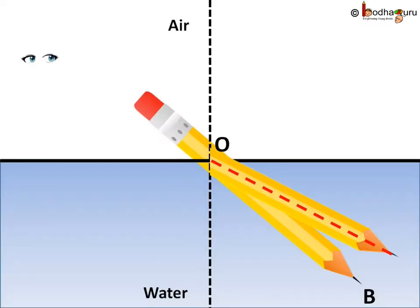To revise, if we put a pencil in a jar of water and look at the tip of the pencil from the top, it would appear as if the pencil has bent after it entered inside the water.